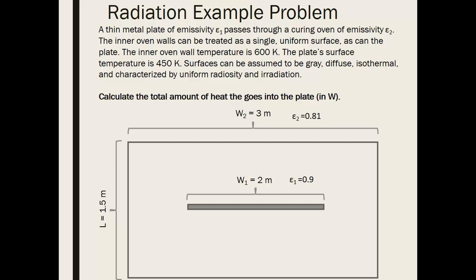Surfaces can be assumed to be gray, diffuse, isothermal, and characterized by uniform radiosity and irradiation. Calculate the total amount of heat that goes into the plate.